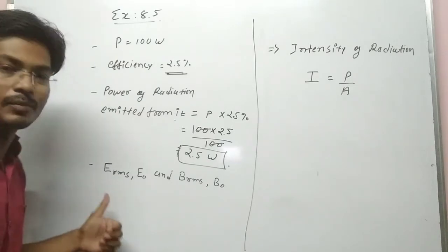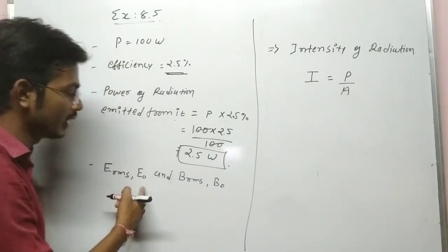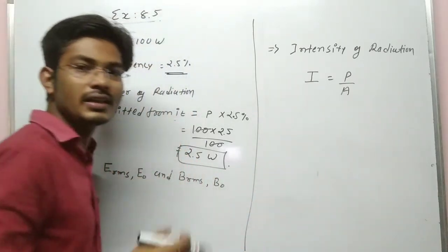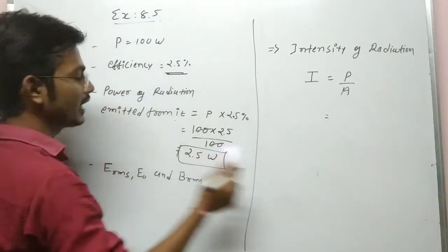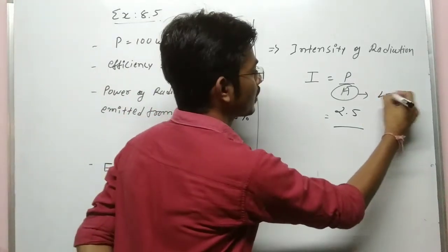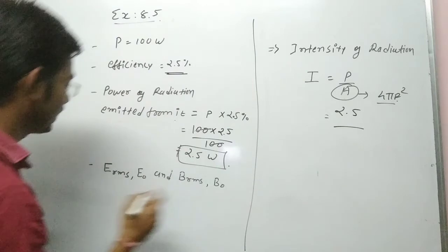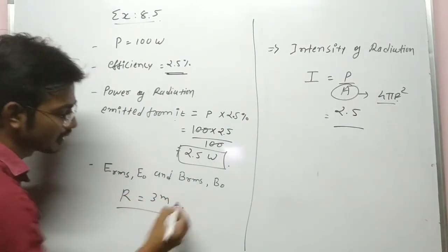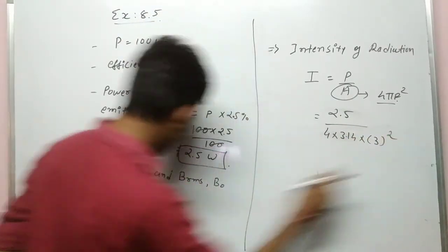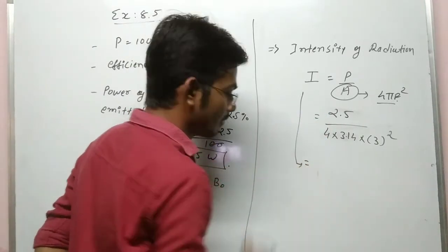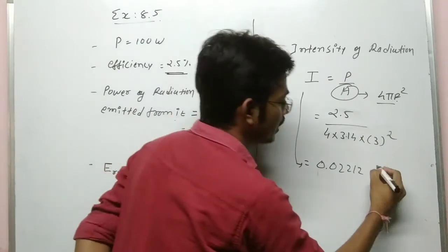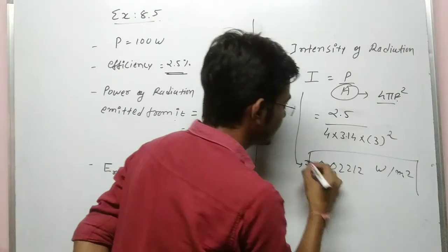We need to find E_rms, E₀ (amplitude of electric field), B_rms, and B₀ (amplitude of magnetic field). But first we need intensity: I = Power / Area. Power is 2.5 W, and since the bulb is a point source, area = 4πr². With r = 3 meter, area = 4 × 3.14 × 3² = 113.04 m². So I = 2.5 / 113.04 = 0.02212 Watt per meter square. That is our intensity value.